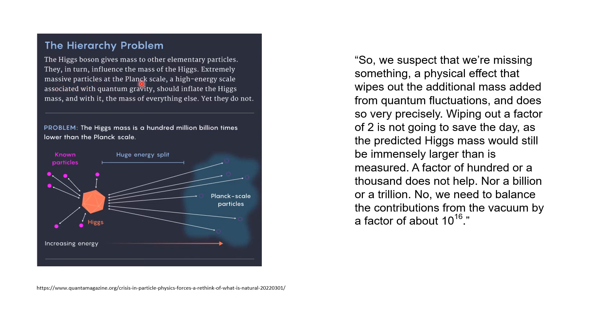Extremely massive particles at the Planck scale, a high energy scale associated with quantum gravity, should inflate the Higgs mass, and with it the mass of everything else. This is about how the calculated mass would be 10^18, and if it were that big, the mass of all the other particles would also be that big, yet they do not.